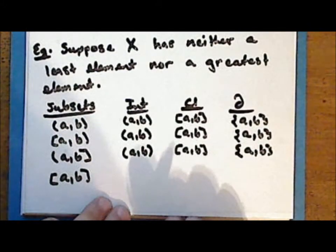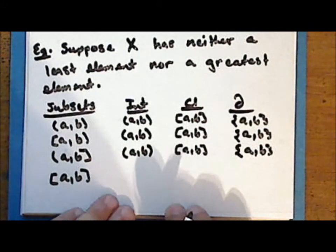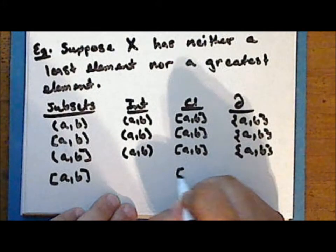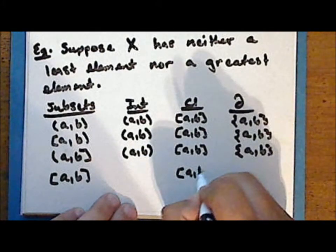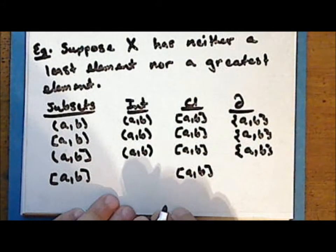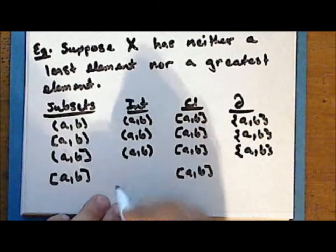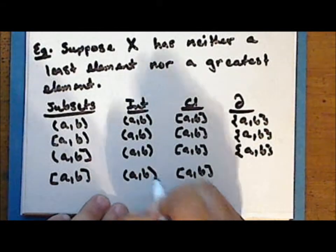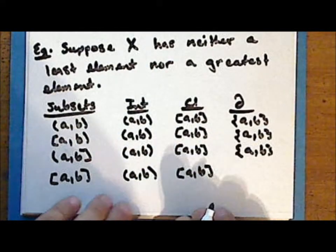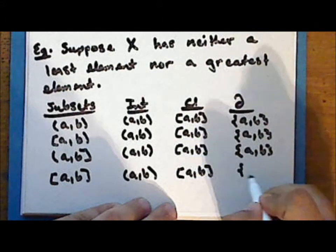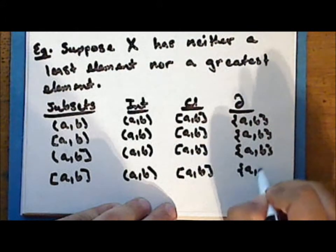The closed interval from a to b is closed and so it is its own closure. The largest open set contained in it is the open interval from a to b, and the boundary is the set containing the elements a and b.